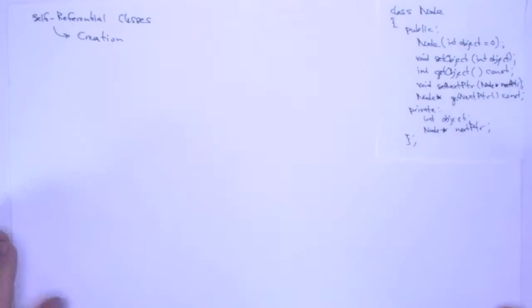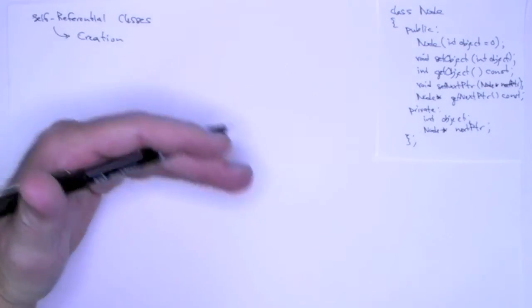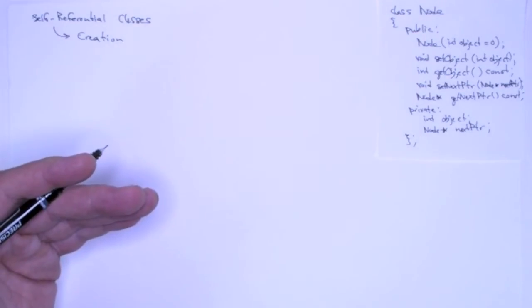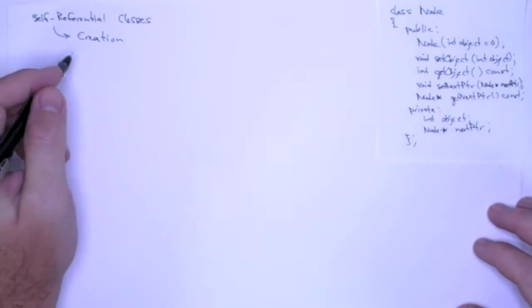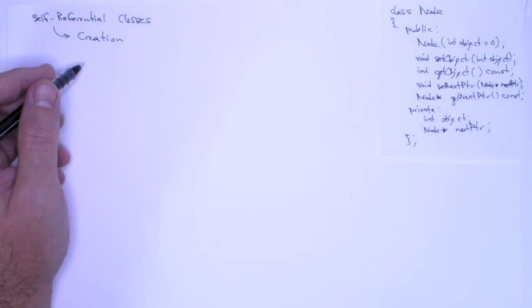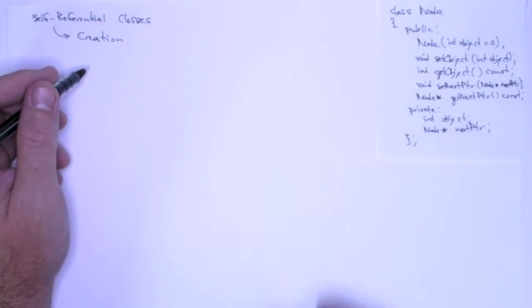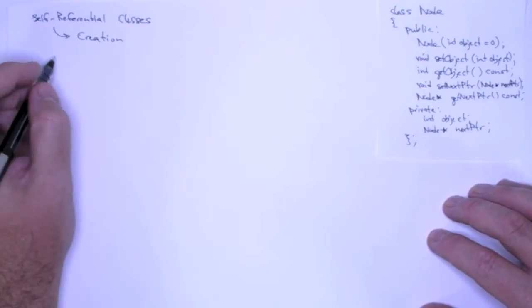And I'll do this kind of in three different panels, but all of this code is going to be in the same main function when you try this out yourself. Now, of course, where we're going with this is we'll be developing a list class. All of this code will be encapsulated into methods in a list class, but we're just trying to get the basic mechanisms figured out here.